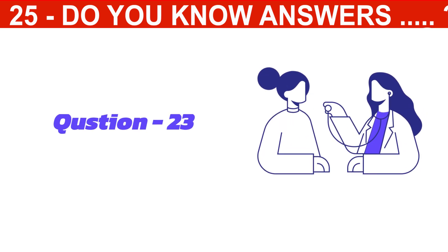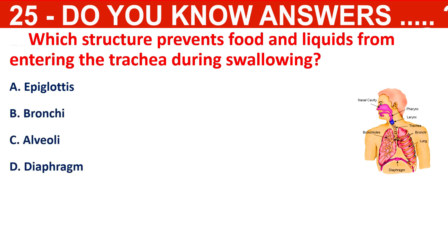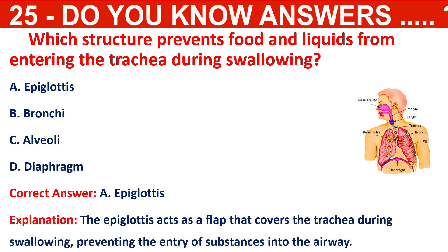Question 23: Which structure prevents food and liquids from entering the trachea during swallowing? The options are epiglottis, bronchi, alveoli, or diaphragm. The correct answer is the epiglottis. The epiglottis acts as a flap that covers the trachea during swallowing, preventing the entry of substances into the airway.